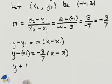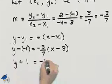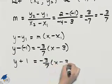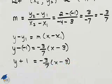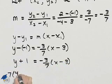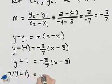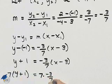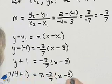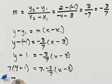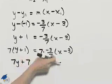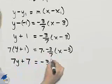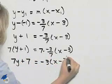I'll have y plus 1 equals negative 3 sevenths times x minus 3. Now I have a fraction here, so what I think I'll do is I'll multiply both sides by 7, and that will get rid of the fraction for me. So I'll have 7 times y plus 7. The 7's here cancel, so I'll have negative 3 times x minus 3.